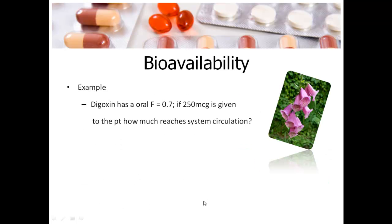For example, digoxin has an oral bioavailability of 0.7. If we give 250 micrograms to a patient, how much of that will reach systemic circulation? Take a moment to think about that.